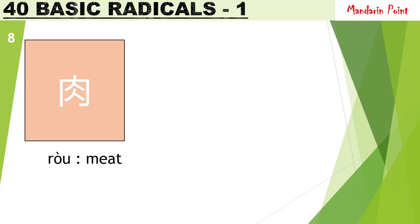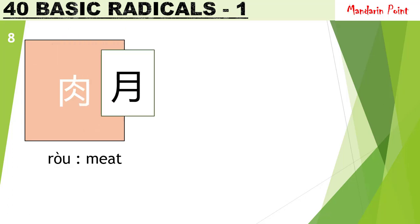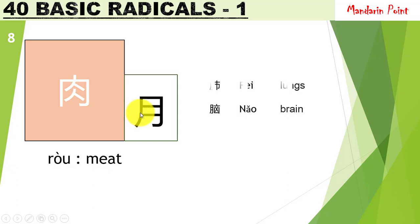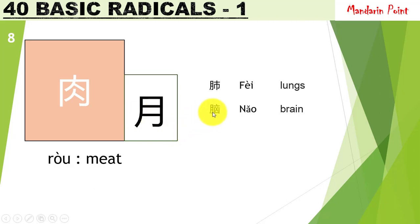The radical 肉 ròu means 'meat.' Its short form also represents 月 yuè meaning 'moon.' However, when it is used as a radical placed on the left side of a character, it represents ròu — meat, flesh, or body parts. For example, 肺 fèi meaning 'lungs' and 脑 nǎo meaning 'brain' — you can see this radical is present on the left side of both characters.